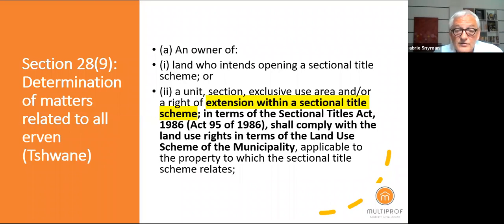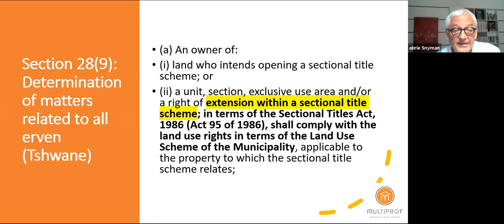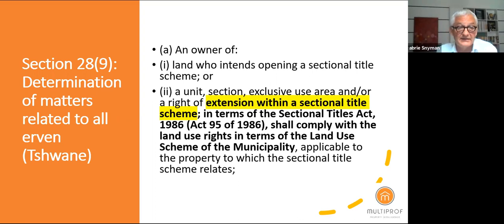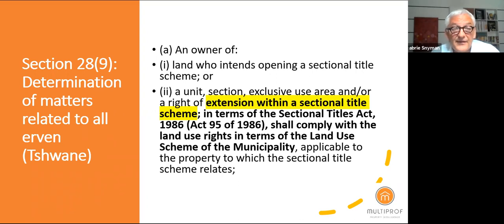If any additions are done and changes are required, you first need to apply to council. In this process, council compares the sectional title plans with the building plans and the structures on the property. Although it's not strictly SPLUMA-related, council is using this to force sectional title owners and complexes to be legal. The process of rectifying building plans, sectional title plans, site development plans, and obtaining section 28.9 permission can take up to nine months or a year.